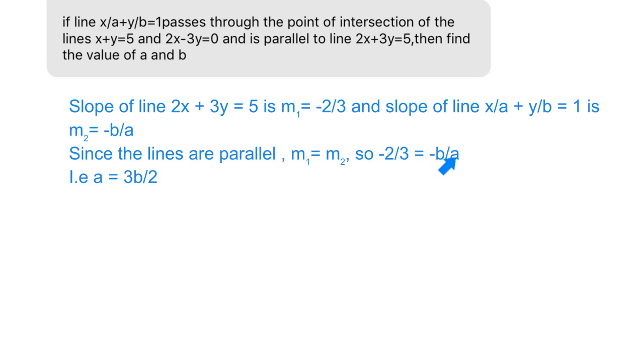So -2/3 should equal -b/a. We can cancel the negative signs, and after cross multiplication we get a = 3b/2.